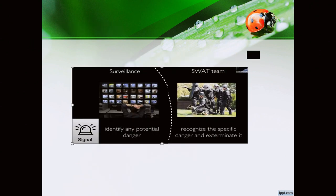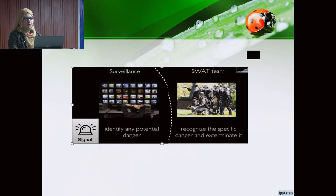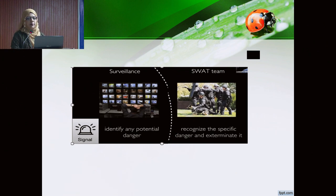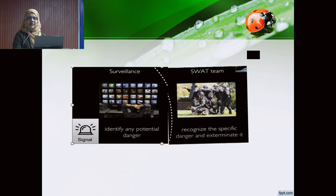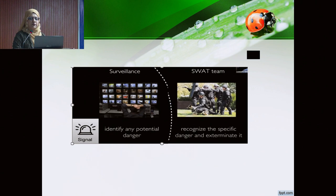The immune system has two components. The first is surveillance, which identifies any potential danger in the body and gives a signal. The next part acts as a SWAT team — it recognizes the specific danger and exterminates it.